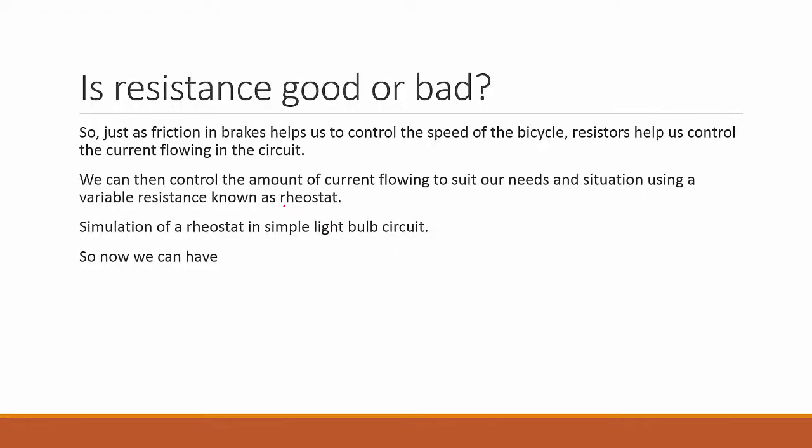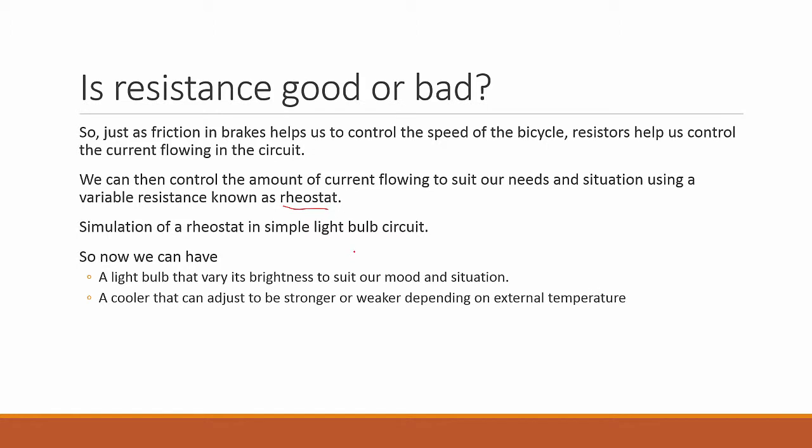So using a rheostat, we now can have a light bulb that can vary brightness to suit our moods and situation. We can have a cooler instead of a light bulb. We use a rheostat to control a cooler that can be adjusted to be stronger or weaker depending on external temperature. Or we have an electrical motor that can spin faster or slower depending on the situation. All these features work by applying the ideas of Ohm's law.